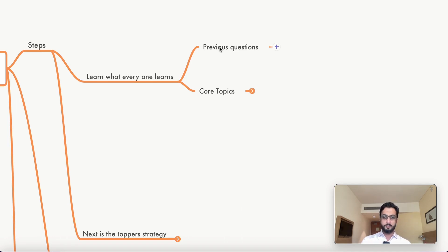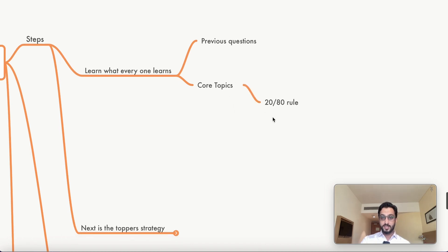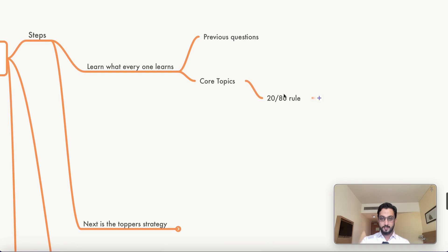Concept layering, all those things, especially in regards to the core topics. Which comes under 2080 rule, which is called the smart learning strategy. I have made already one video on that, the 2080 rule. It's very important to know the core topics is the 20 percentage. So, you have to master them. And this is what everyone learns.